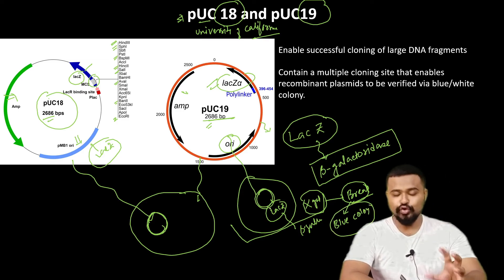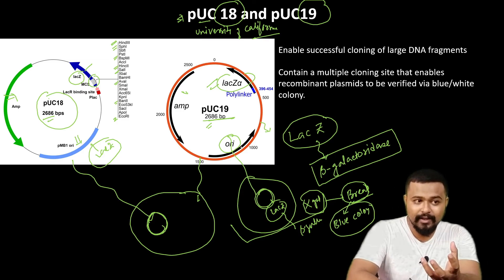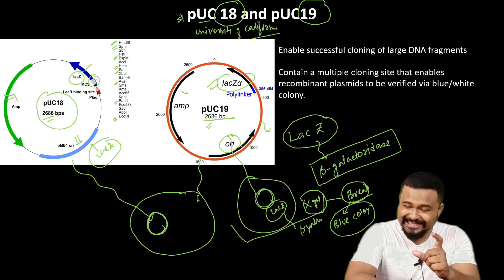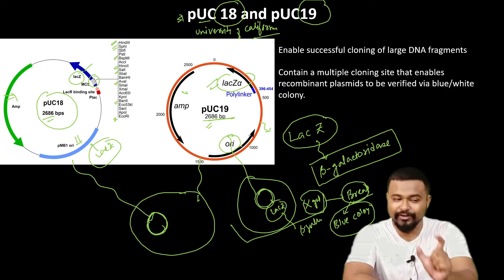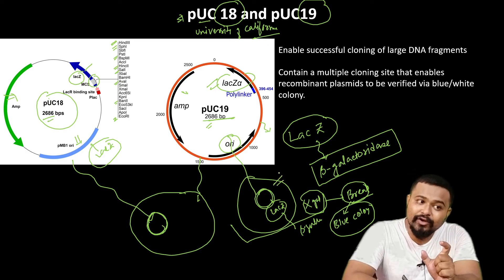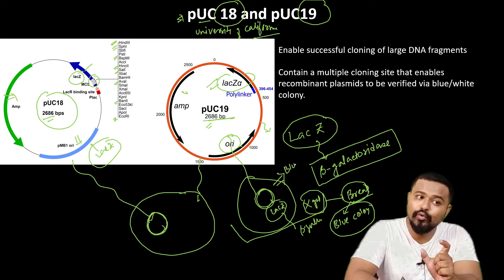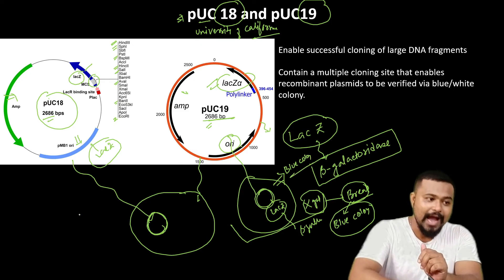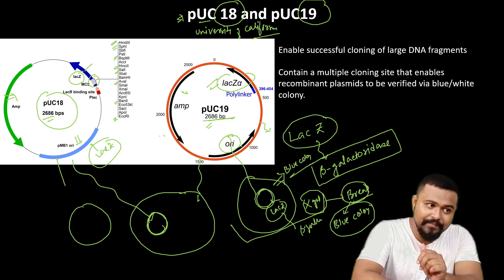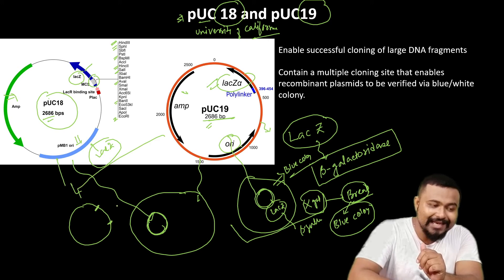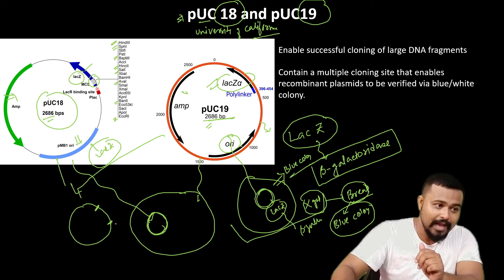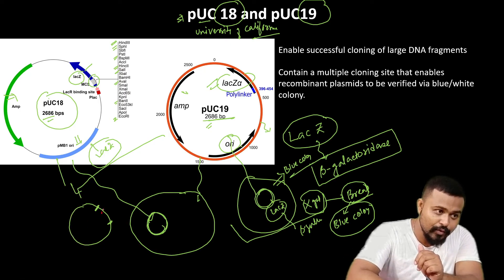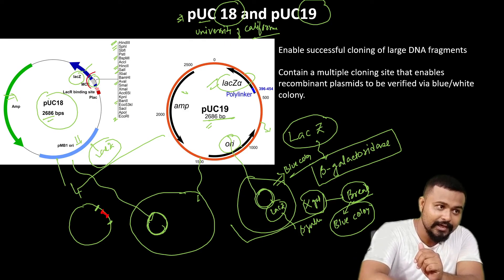Blue colonies mean that the bacteria cell has the plasmid with the lacZ gene intact — the lacZ gene is undisturbed. If the bacteria has the plasmid with an intact lacZ gene, and the multiple cloning site has not been cut, the bacteria will form blue colonies.